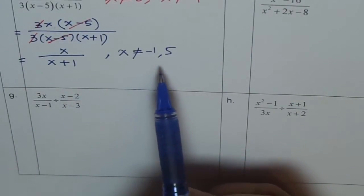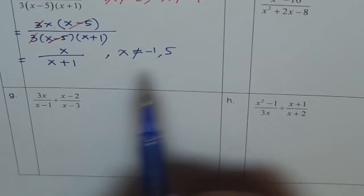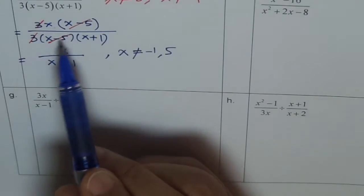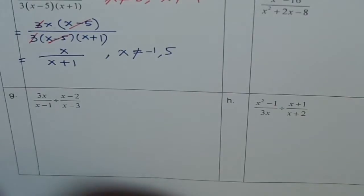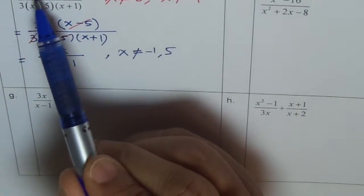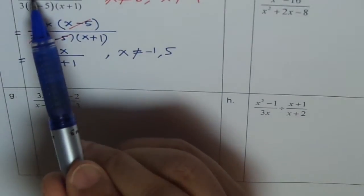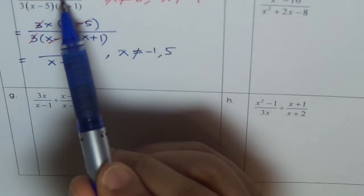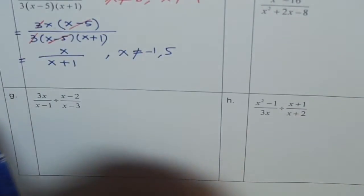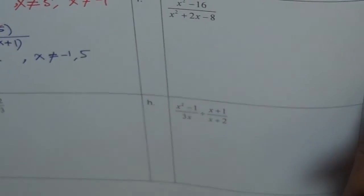It is important to write the restriction at the end because this simplified expression doesn't show the restriction of 5 — that term was cancelled out. Some people will cancel 3 and 3 directly without factoring first, which is not permitted and is wrong. If you had done that, you would have never identified 5 as a restriction. So that is a mistake you should not be making.